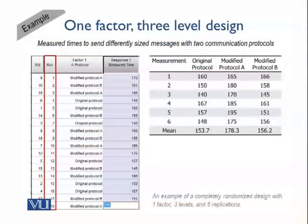If you had not studied this course, you might say we have evidence that the original protocol is better if our aim is minimization. But we cannot really conclude that on the basis of a very small sample. We need proper statistical testing to see if a statistically significant difference exists between these three treatments, or if they are coming from the same population mean and the observed difference can be explained by random chance only.